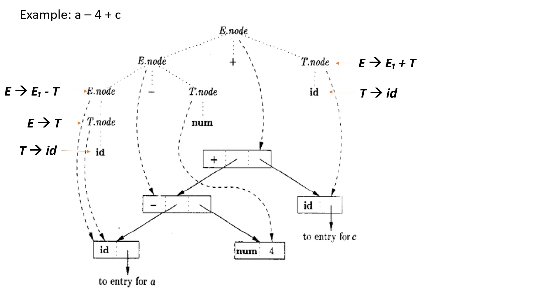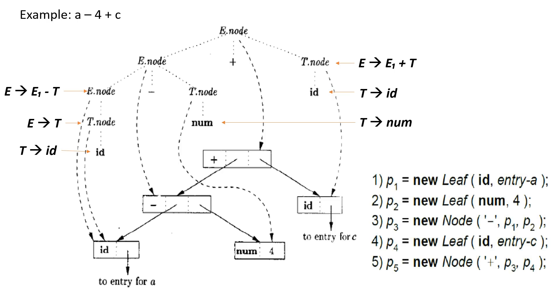Now, if the rules are evaluated during a post-order traversal of the parse tree, or with reductions during a bottom-up parse, then the sequence of steps shown below end with p5 pointing to the root of the constructed syntax tree.